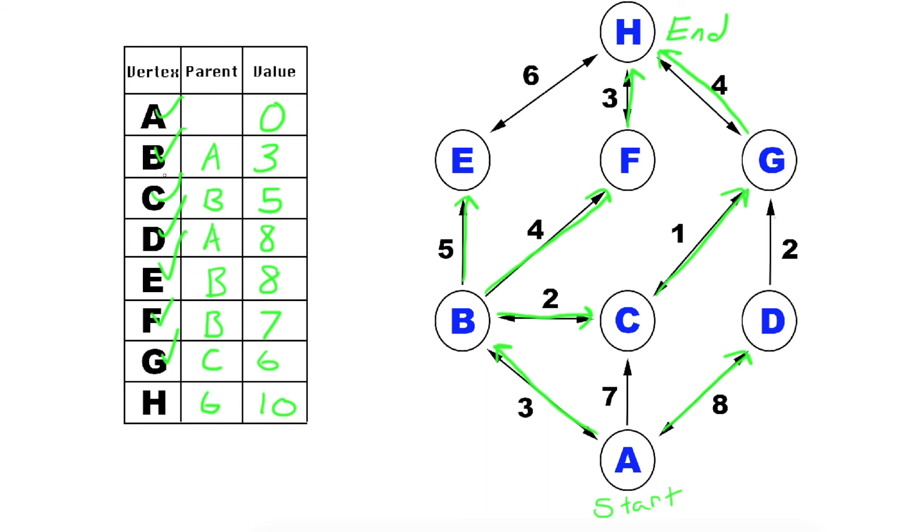Now we've hit all the other vertices besides H, which means we found the smallest distance. It's going to be a 10. So now that we've found that, what happens if we were only given this grid, and we want to find a path to get back to A?